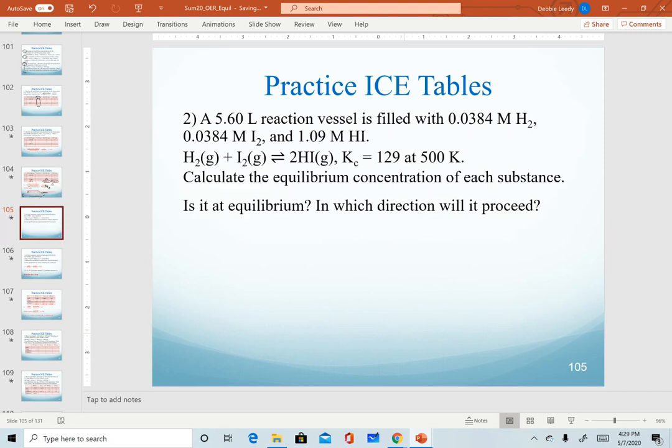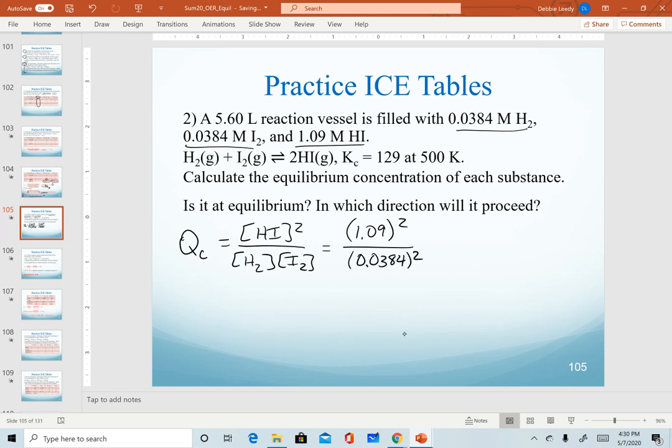For our second problem, the variation here is that we're given quantities of all three substances, so we actually need to calculate a Q value first. We set up our equilibrium expression, products over reactants, coefficients are the exponents, and we plug in all of our quantities. Noticing that our hydrogen and iodine are given the same value, so we can just square those. This gives us a Q value of 806.